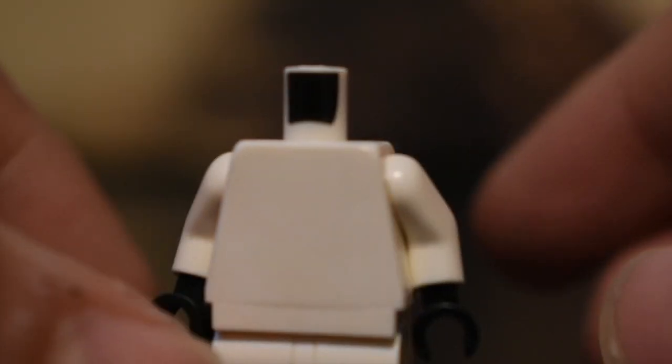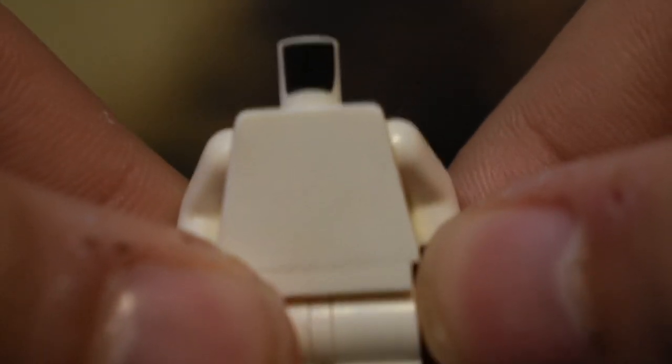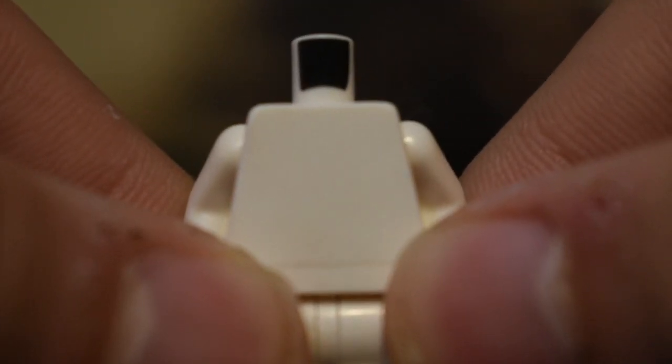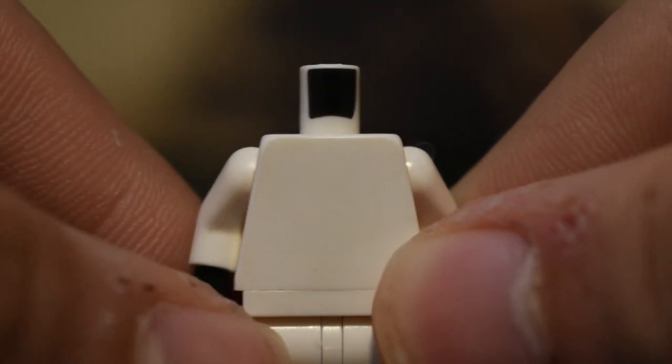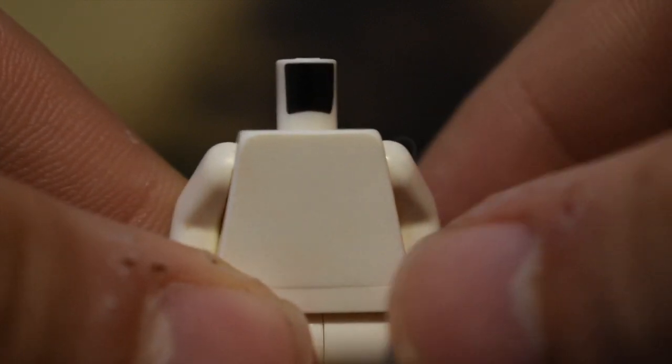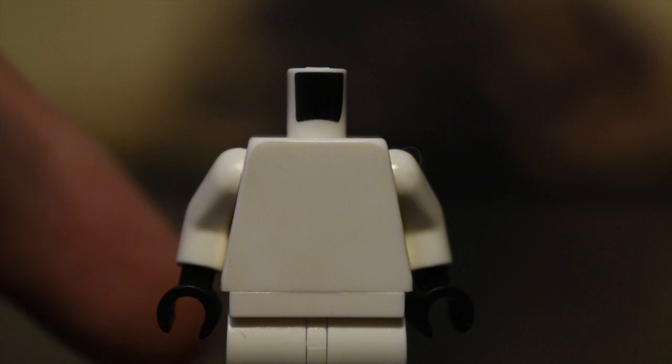While this is what you get when you use 1,000 grit sandpaper. As you can see, it's a lot smoother. If I look really closely, I can still see some of the scratch marks. So you really want 1,000 grit or higher, so maybe 1,200 grit or 1,400 grit will be better.